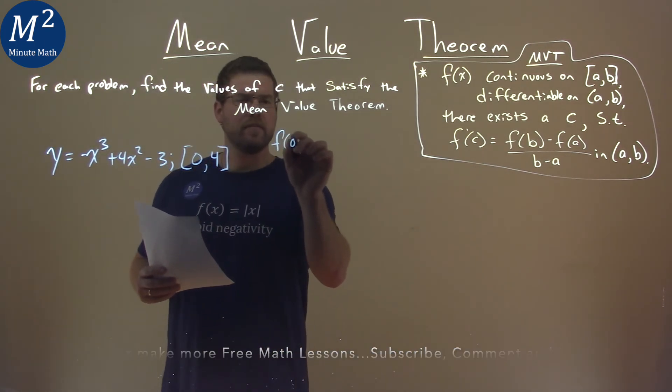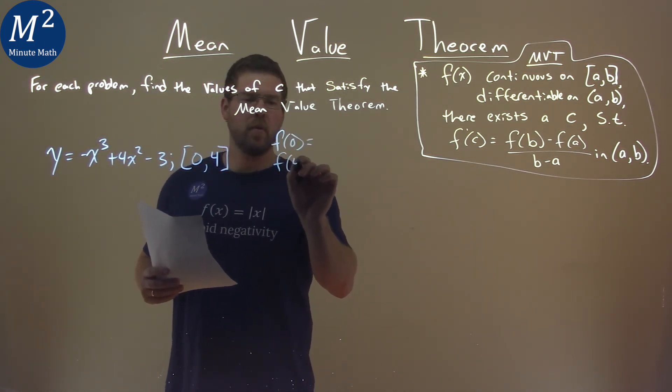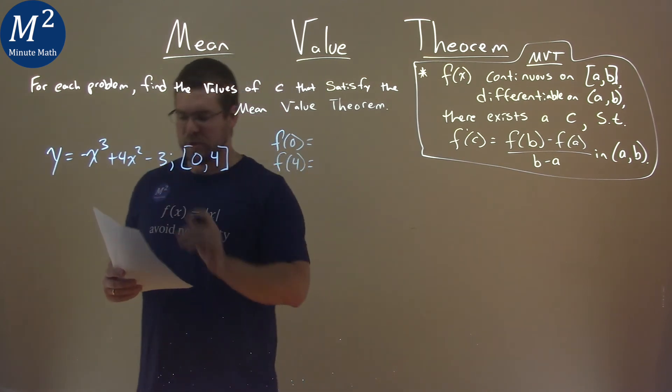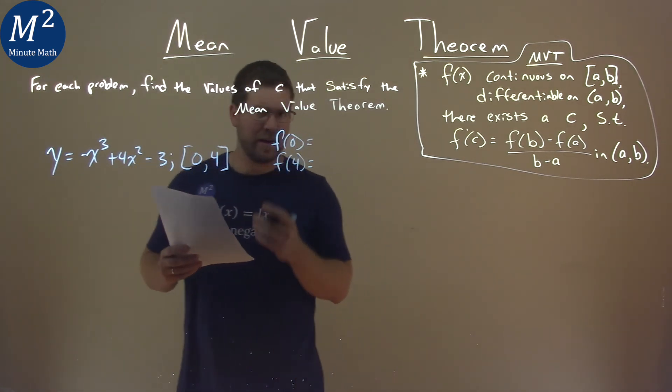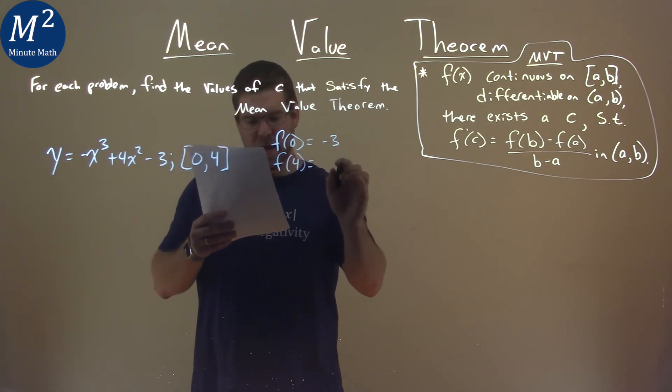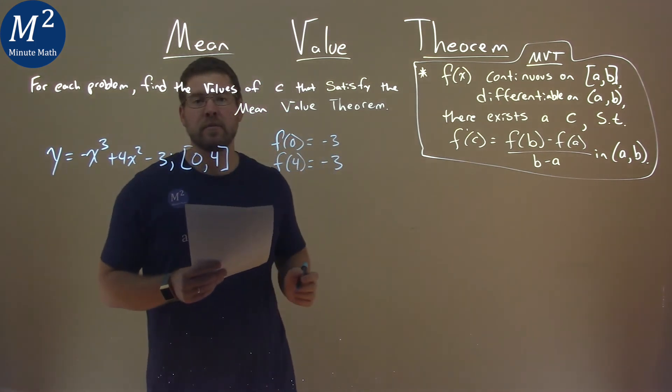First, we want to find f(0) and f(4). Remember, we're plugging these into our original function. I found these values for you: f(0) = -3 and f(4) = -3.